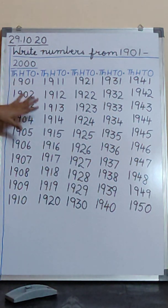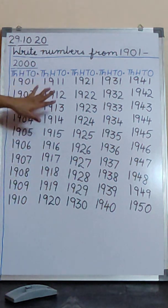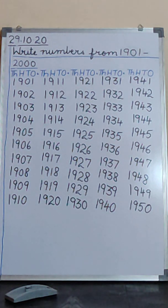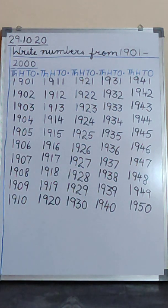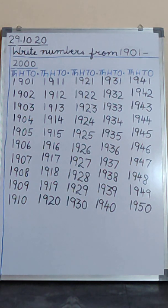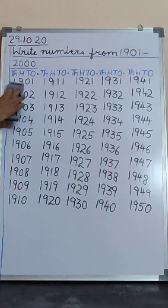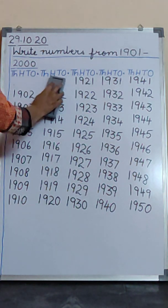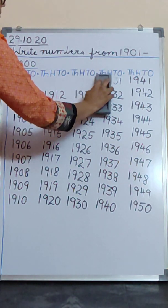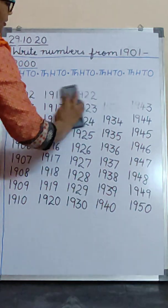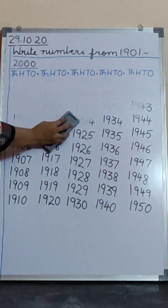Now do your work very neatly like this. Write very neatly and please see the board. 1950. Now I am rubbing the board for you all.